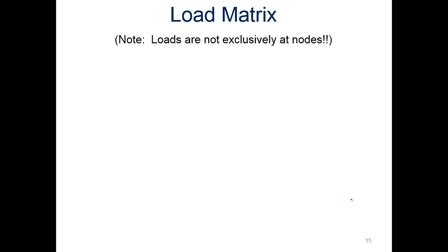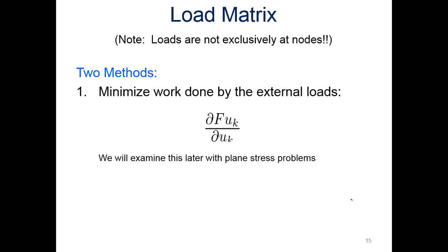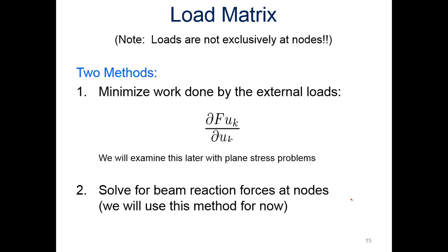Load matrix. So loads are not exclusively at nodes. We can have a distributed load across the whole beam, so we need to be careful on how we set this up. We've got two methods. One, we can minimize the work done by the external loads, so continuing with the minimum total potential energy formulation. We'll do that later. But for now we're going to solve beam reaction forces at the nodes. So when it's a distributed force across the whole beam, what does that look like if it's just applied at the nodes I and J for a given beam element? That's what we're going to do for now.